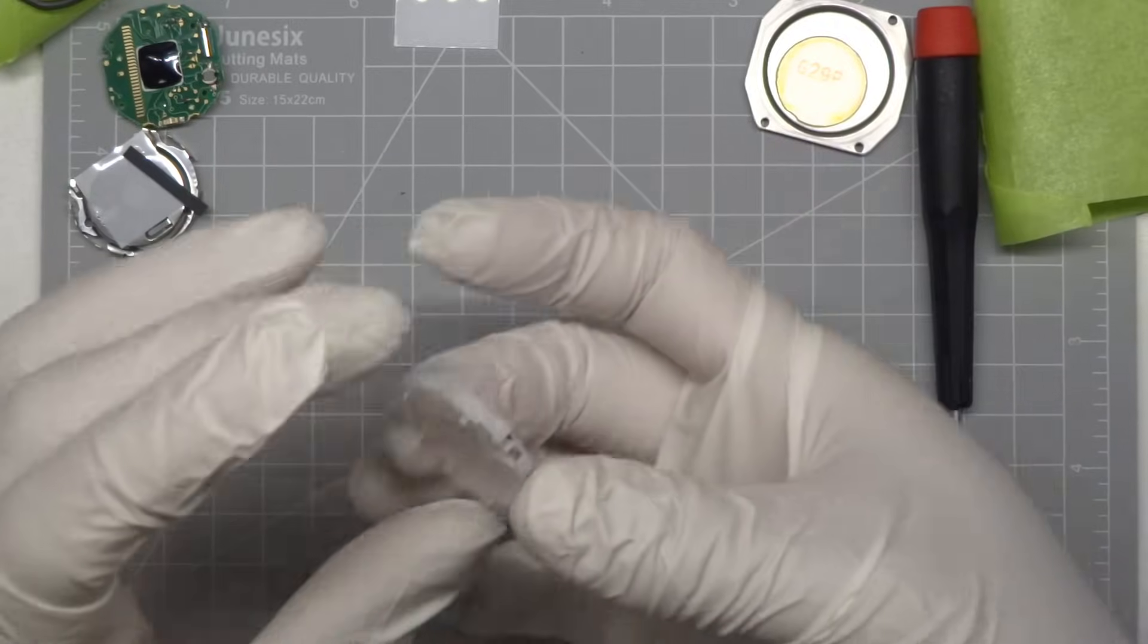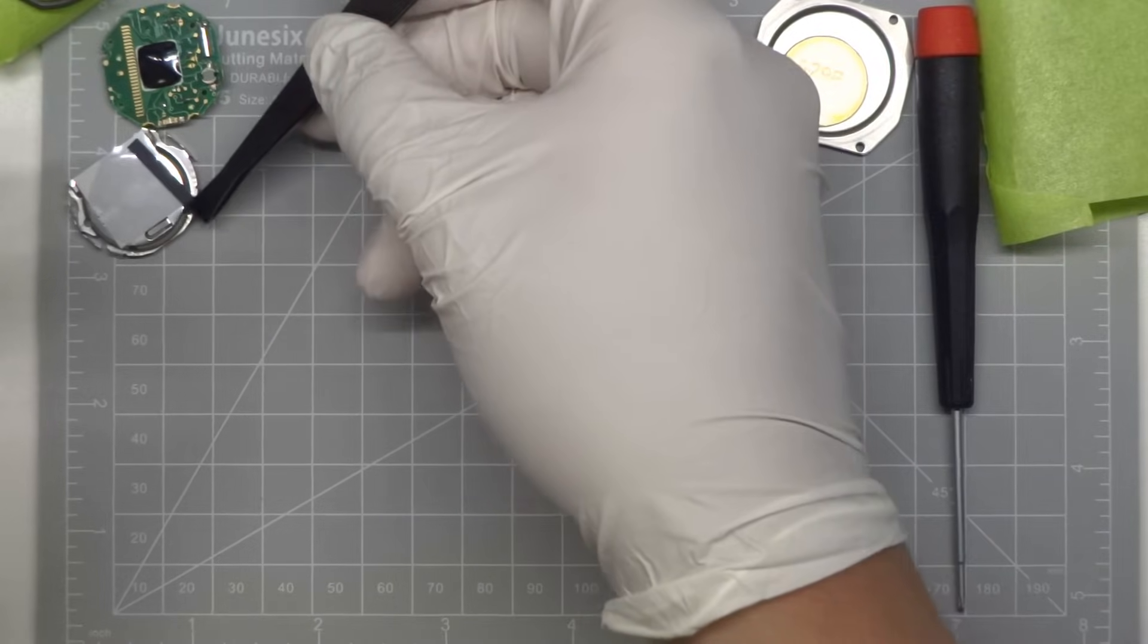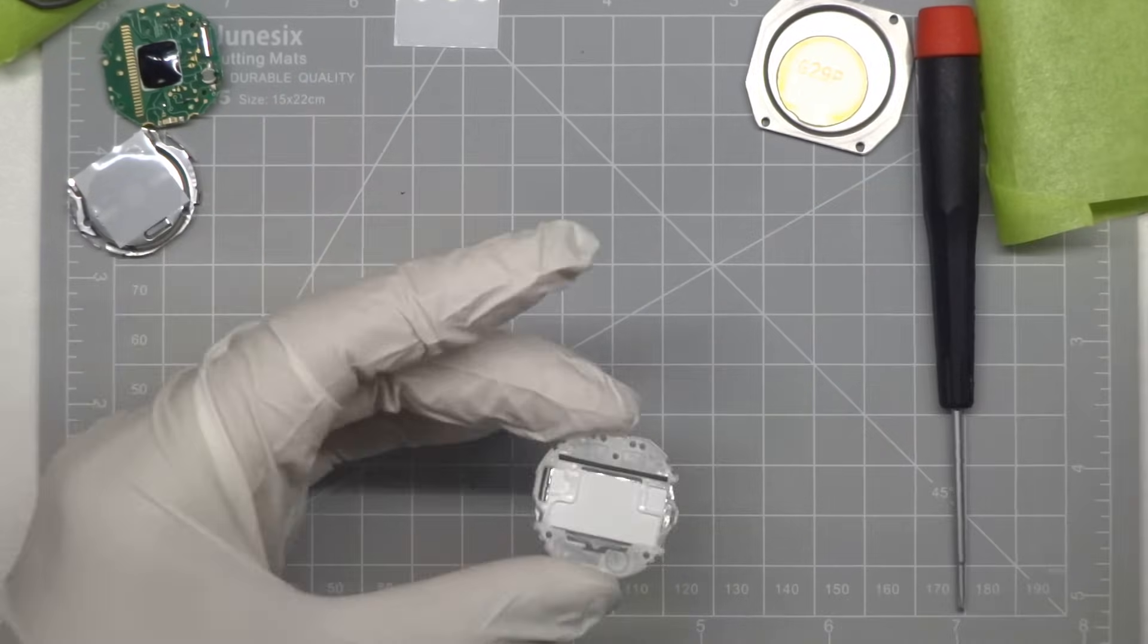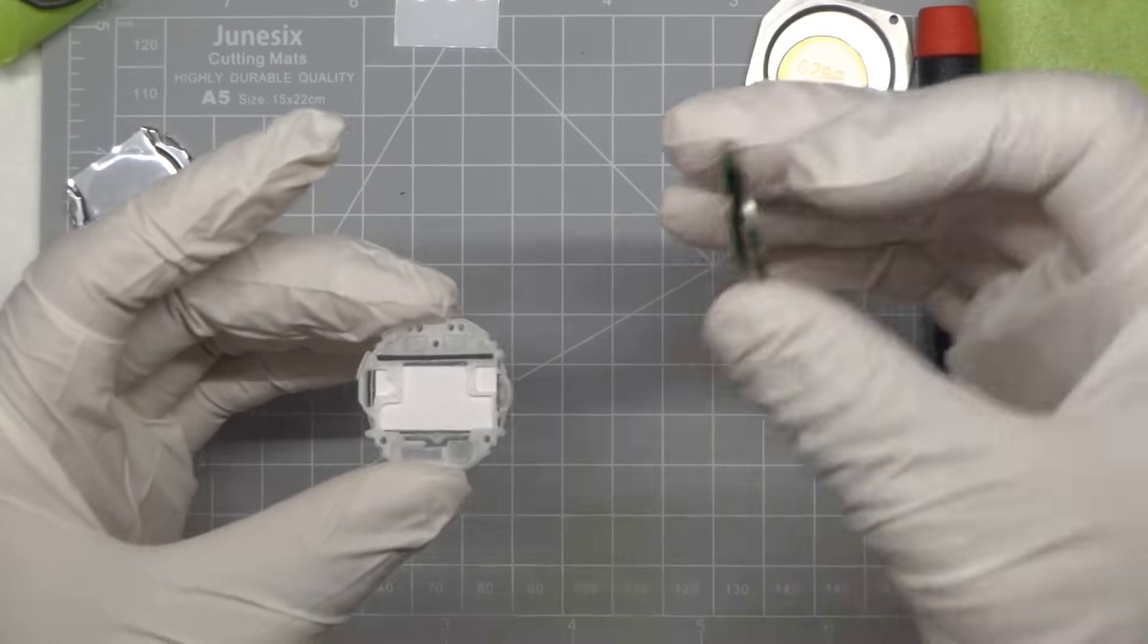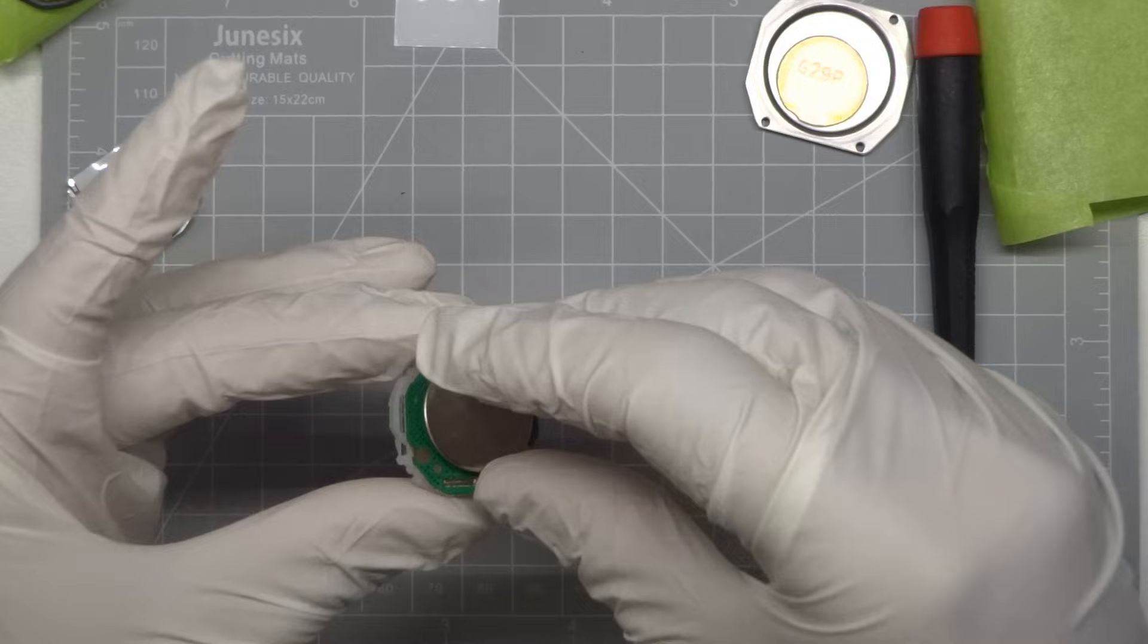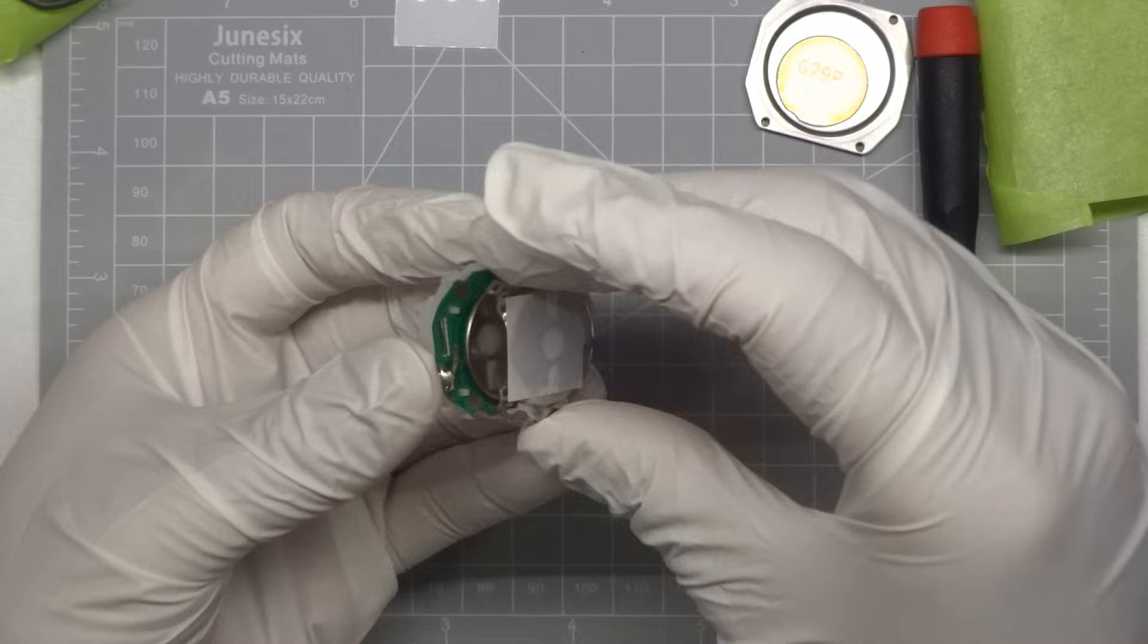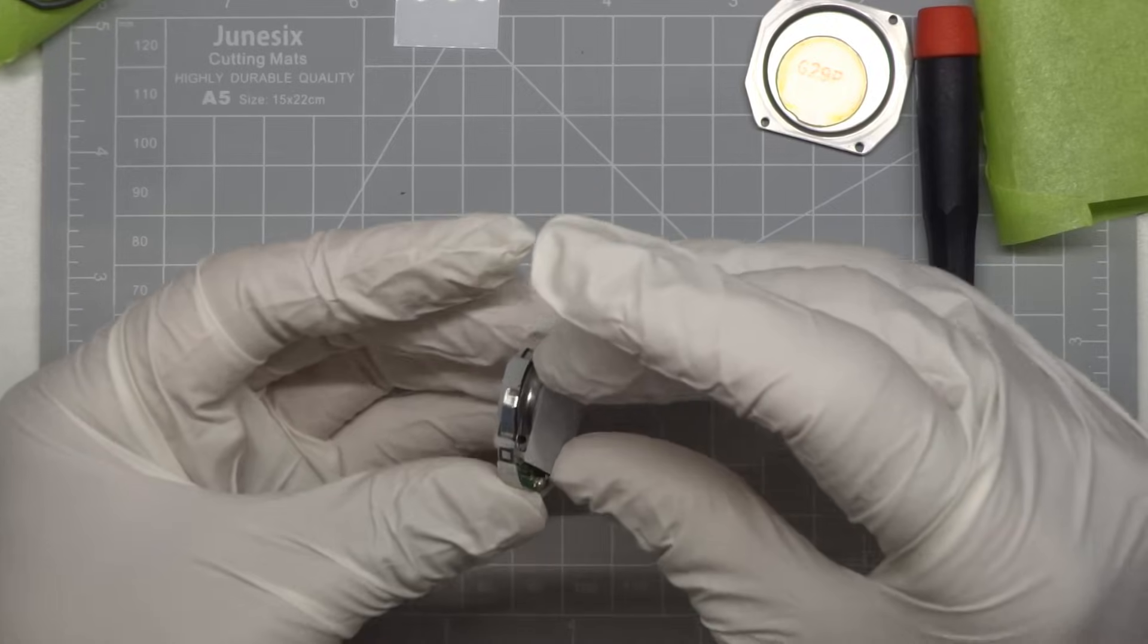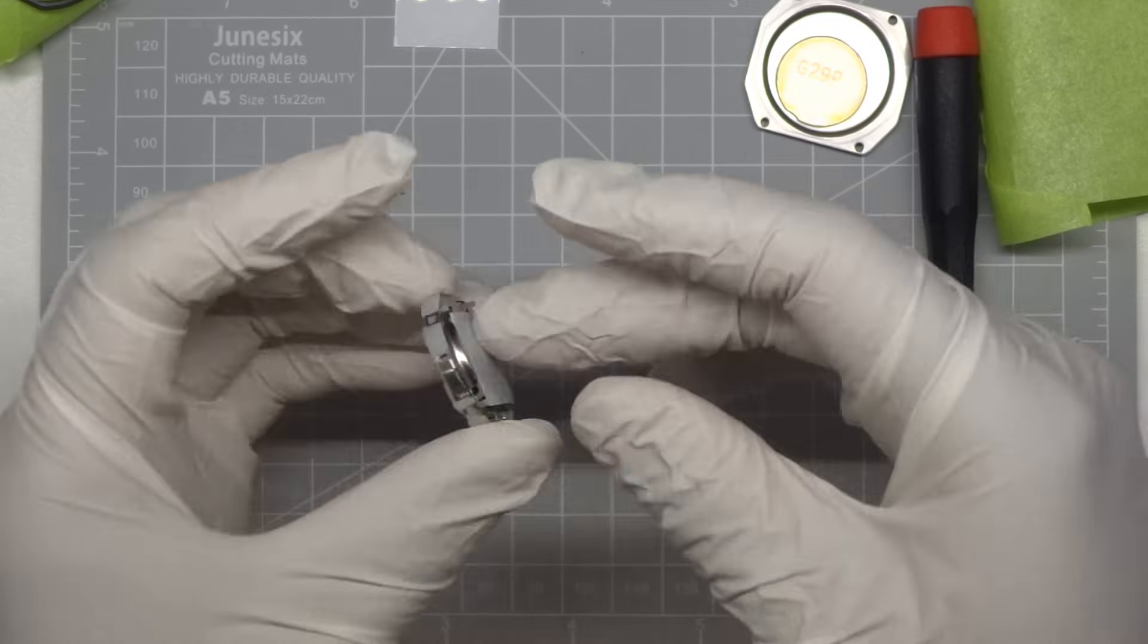Part 4: Reassembling the Module. Reinsert the zebra strip. Reinsert the PCB. Reattach the metal clip.